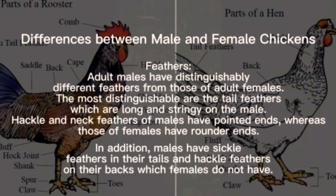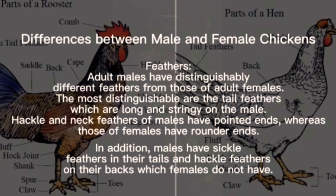Feathers: adult males have distinguishably different feathers from those of adult females. The most distinguishable are the tail feathers, which are long and stringy on the male. The tail feathers of males have pointed ends whereas those of females have rounder ends. In addition, males have sickle feathers in their tails and hackle feathers on their backs, which females do not have.